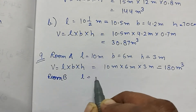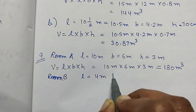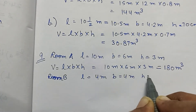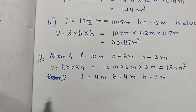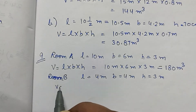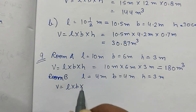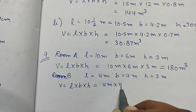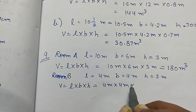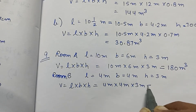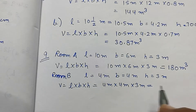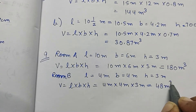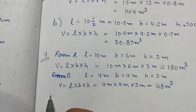Room B: length is 4 meters, breadth is 4 meters, and height is 3 meters. So volume is L into B into H — 4 meter into 4 meter into 3 meter. 4 times 3 is 12, and 4 times 12 is 48 meter cube.